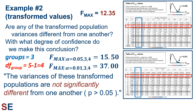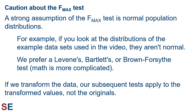For example, if we just wanted to know if the average sizes in some areas were different, we may not care if the raw values were different or the square roots of the values were different — both results show some kind of difference. A strong assumption of the Fmax test is normal population distributions. If the populations are not normally distributed, the Fmax test can easily give type 1 or type 2 errors. The example data sets in this video aren't normal, so they aren't really appropriate for the Fmax test. When this happens, we prefer Levene's, Bartlett's, or Brown-Forsythe test, though the math is more complicated. Also, if we transform the data, subsequent tests apply to the transformed values, not the originals. Results from a one-factor ANOVA on square root transformed data tell us about differences in the means of the square roots, not the original values.